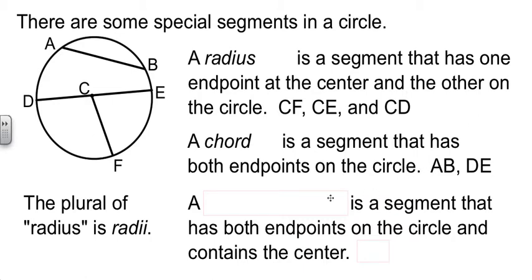Now, DE also meets another description. DE is also called a diameter of the circle because it has both endpoints on the circle and it goes through the center. DE is a diameter. It goes through the center from one side to the other. AB is not a diameter. CF is not a diameter.